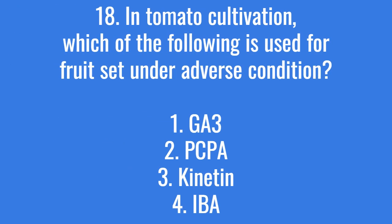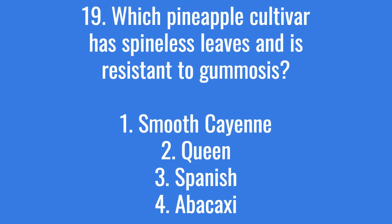In tomato cultivation, which of the following is used for fruit set under adverse conditions? The right answer is option 2: PCPA.